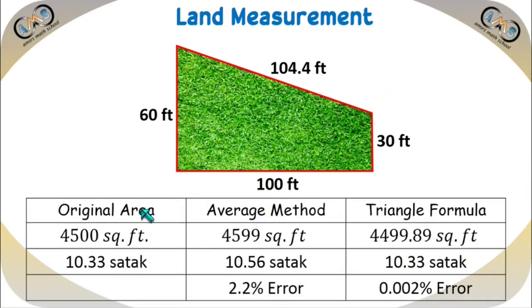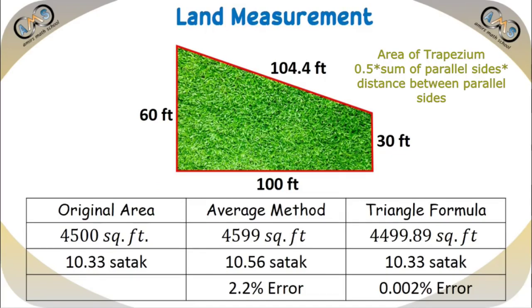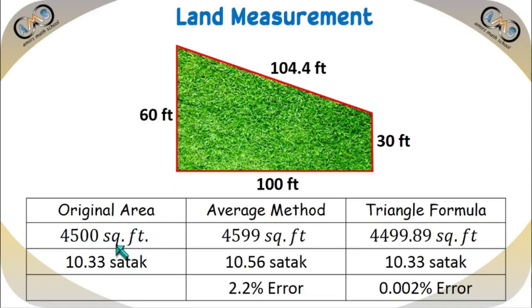First, find the original area. Since this is a trapezium, if we apply the formula for the area of a trapezium, we get 4500 square feet. Dividing by 435.6 gives the result in shotok, that is 10.33 shotok. If we divide this area into a rectangle and triangle and find each area separately, we also get the original result of 4500 square feet.